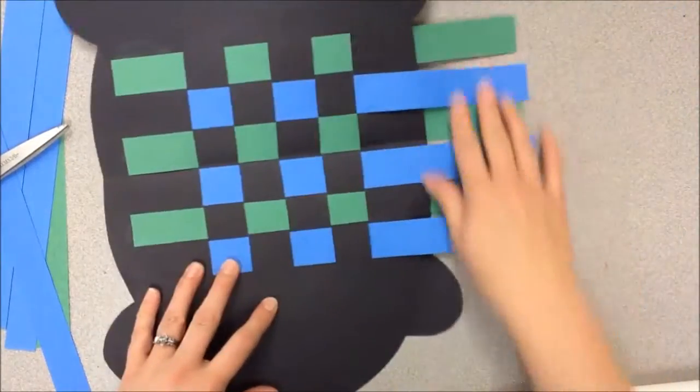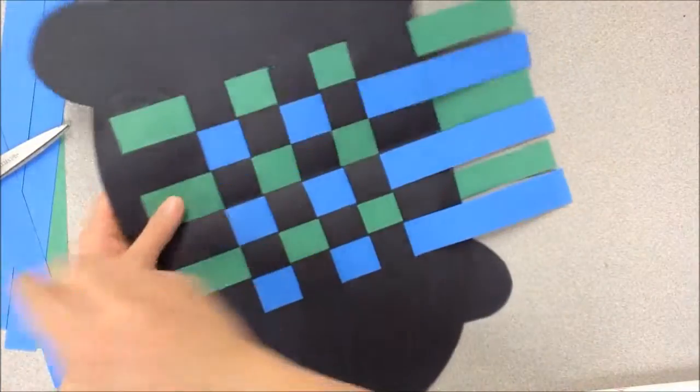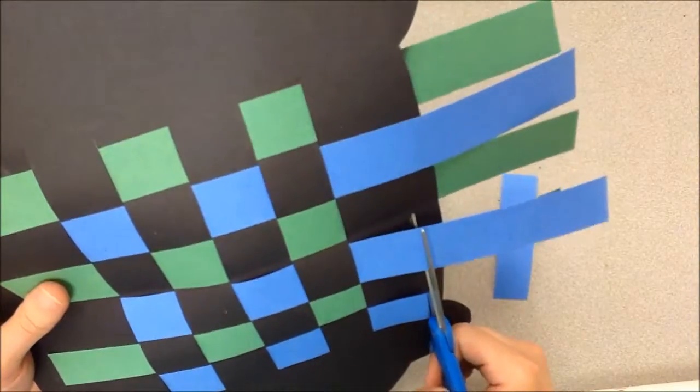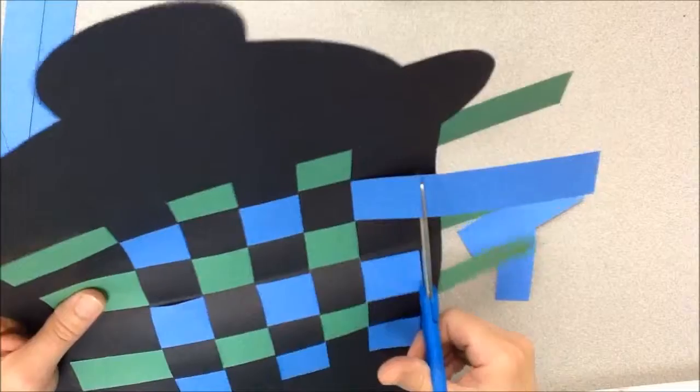There you go. Now I have all of these extras over here on the side. And I want them to be short like these ones. So I'm going to take my scissors and I'm just going to snip straight. Straight little snip. Along the edges.